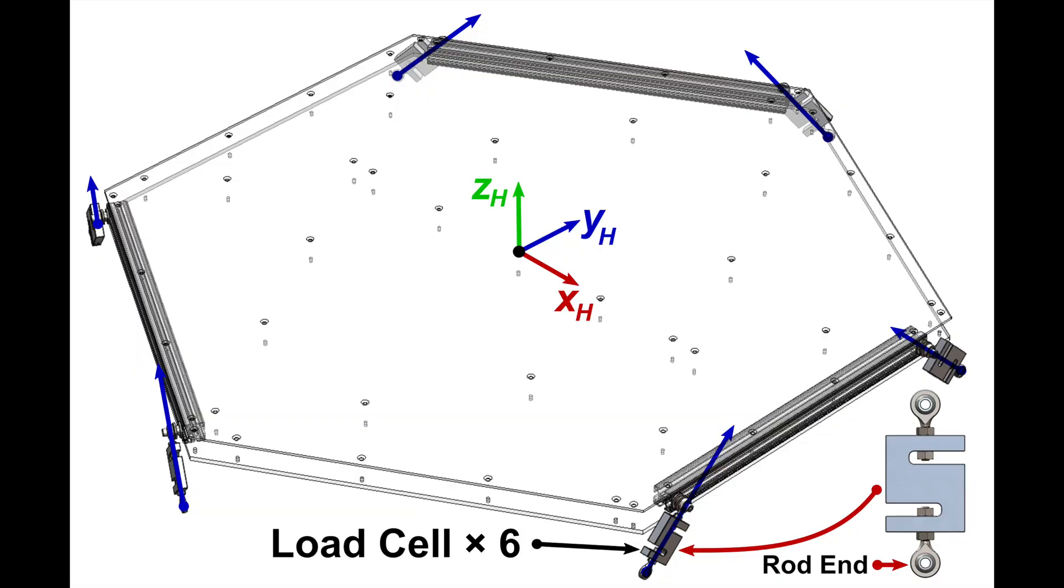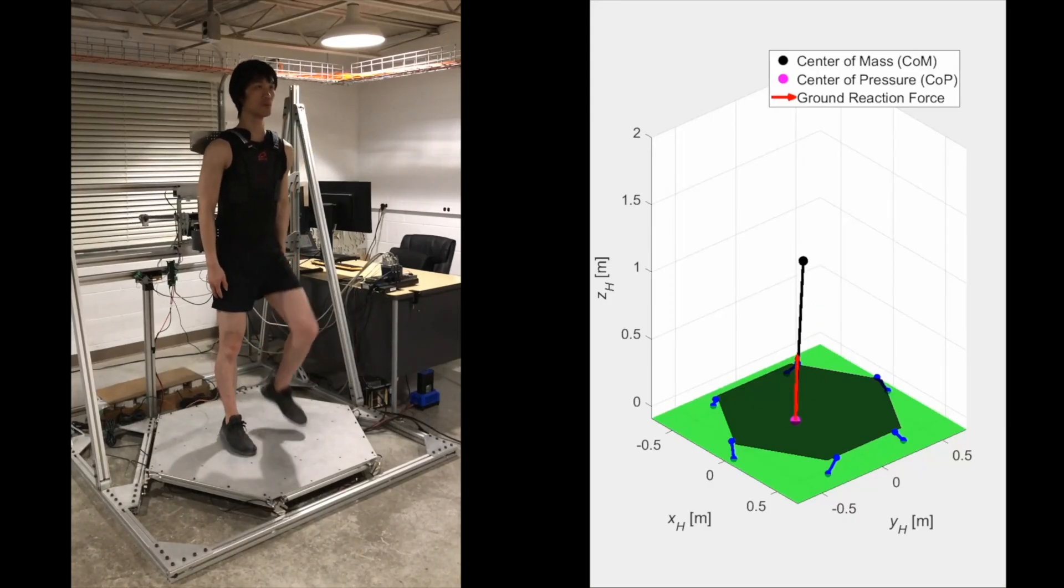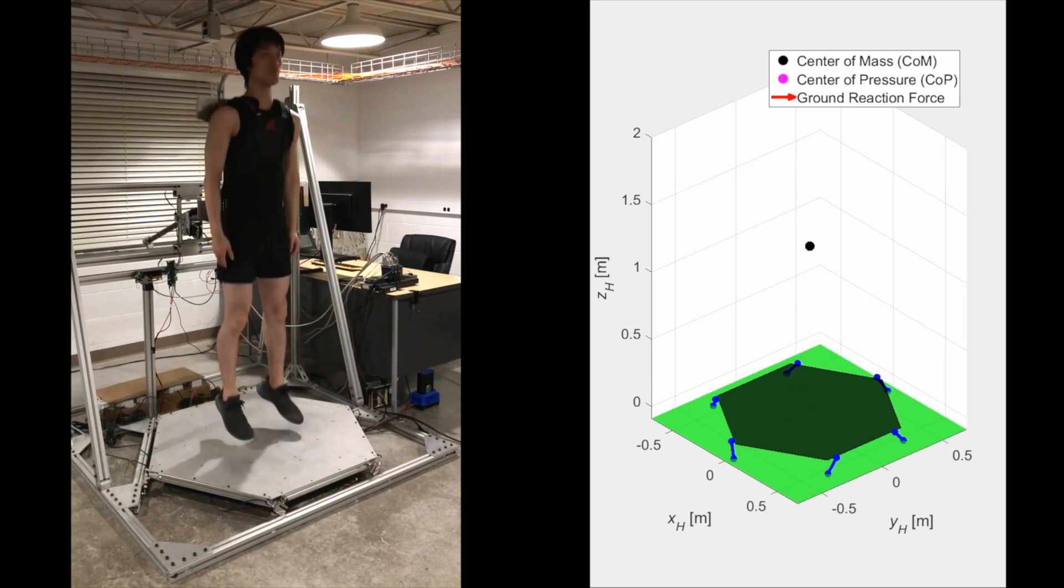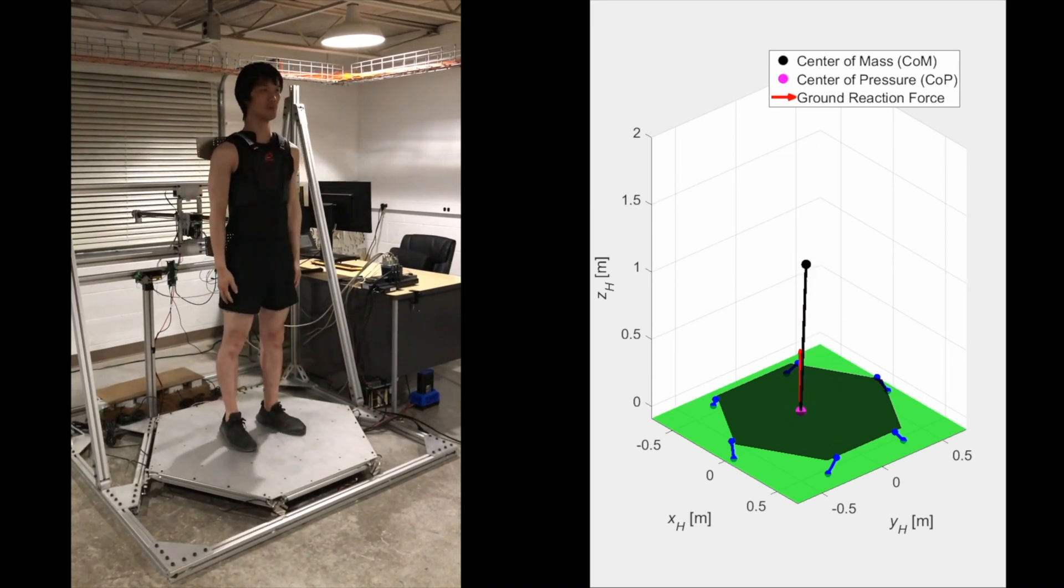The force plate senses the human's ground reaction force and center of pressure position. It utilizes six uniaxial tension-compression load cells and functions as a Stewart platform sensor. Laser and the force plate together generate the human inverted pendulum model.